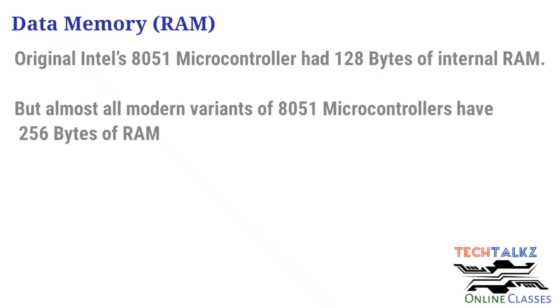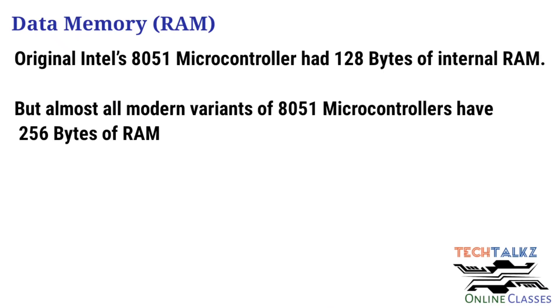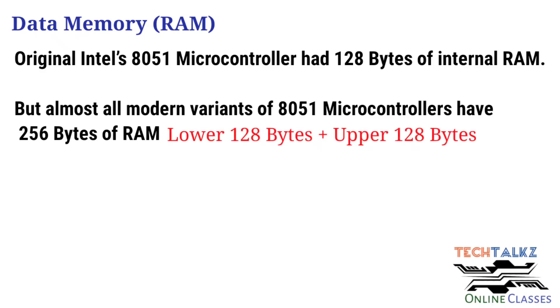Next, data memory — that is RAM details. Intel's original 8051 version has 128 bytes of internal RAM. Modern variants of the 8051 microcontroller have 256 bytes of RAM. This 256-byte memory is divided into two parts: lower 128 bytes and upper 128 bytes.